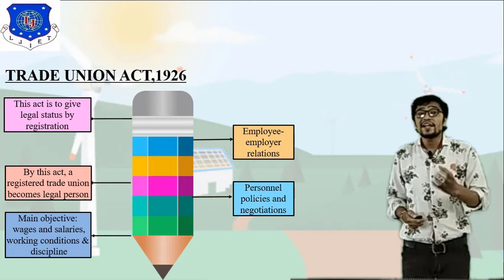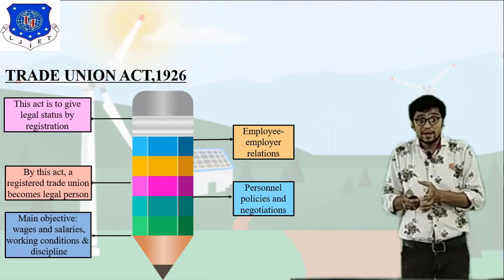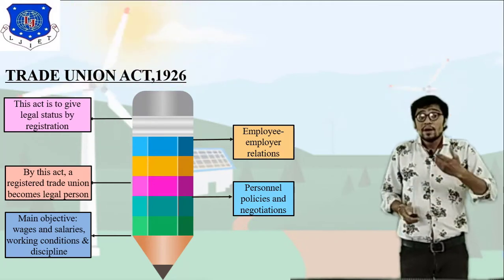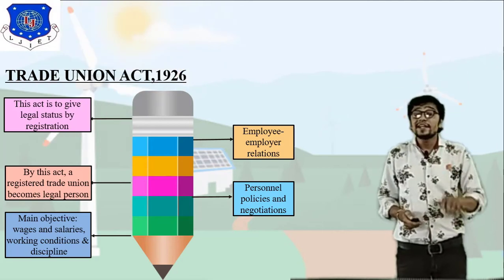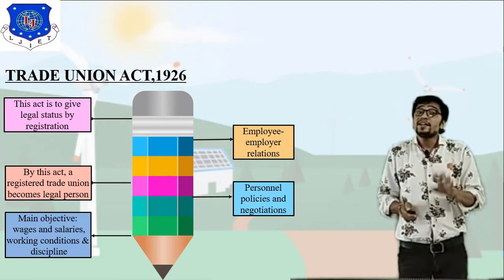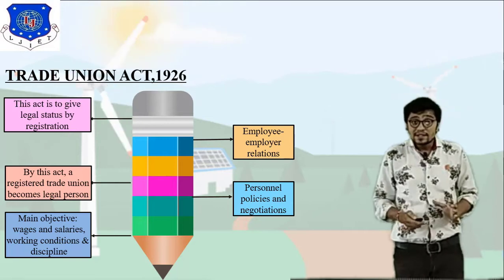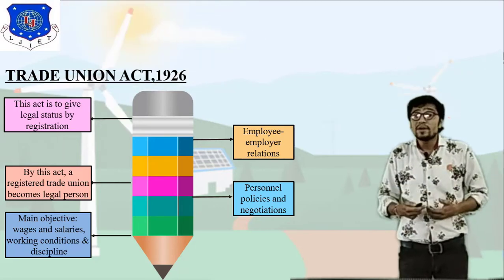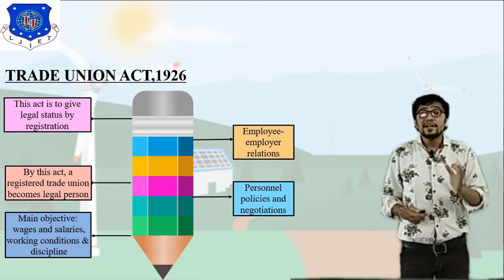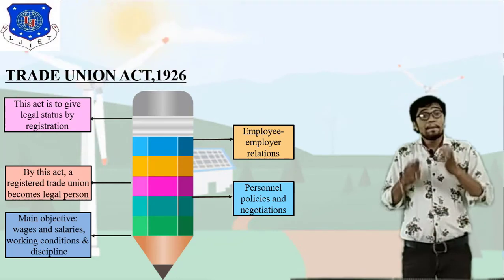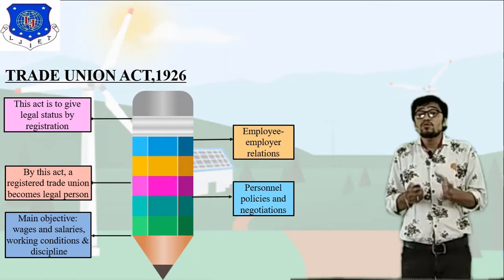The main objectives of the Trade Union Act are related to wages and salaries, working environment, working conditions, and discipline. It integrates all these things and helps improve productivity. The fourth objective is related to employer-employee relationships, and the fifth relates to personal policies and negotiations. By this act, a registered trade union becomes a legal person.